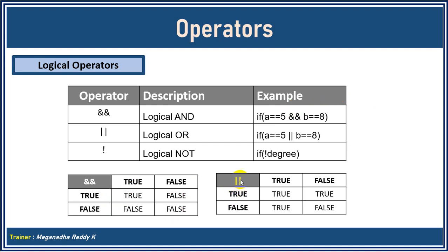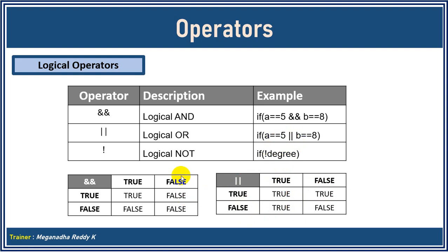In the case of logical OR, you can see here that if this is true OR this is true, the result is true. If this is true and this is false, even then the result is true. Even if this is false and this is true, the result is true. So if either one or both are true, the result will be true. Only if both are false will the result be false for OR. These are the truth tables for logical AND and logical OR.